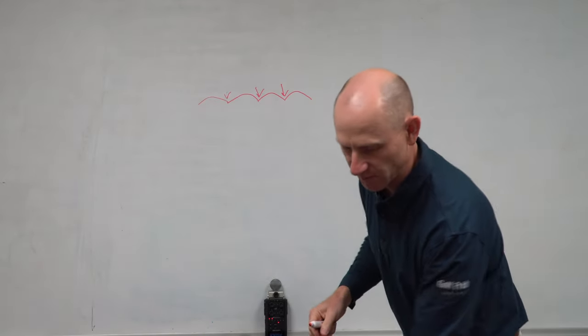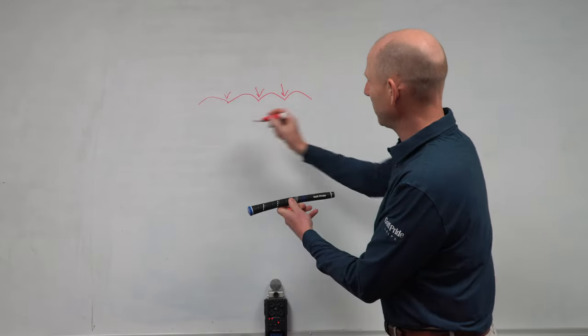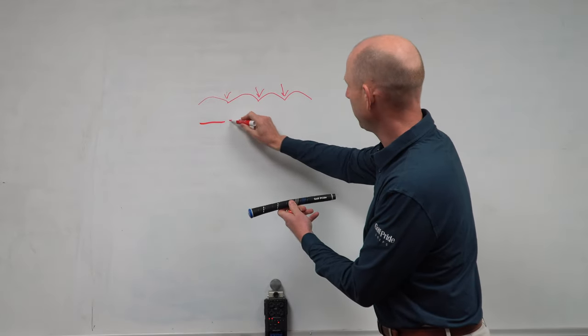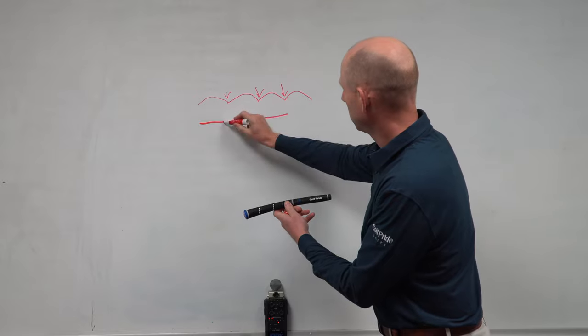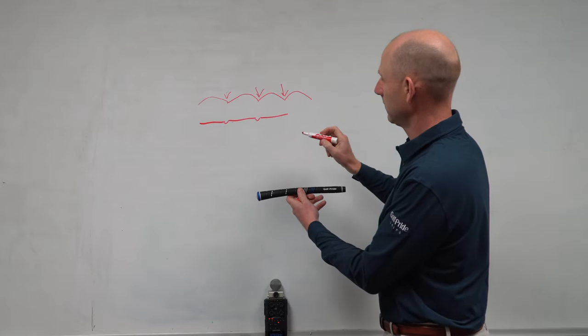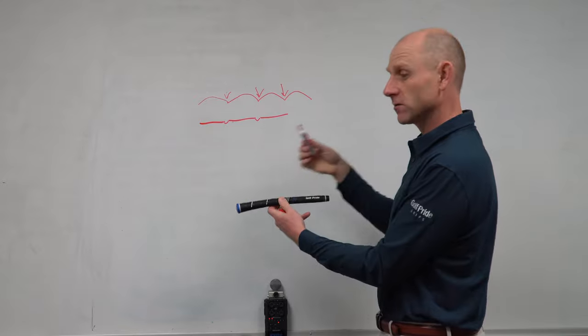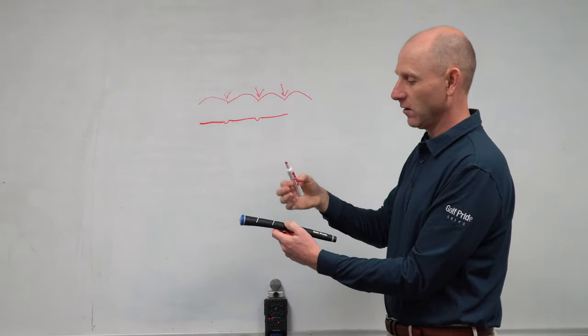But when you look at a CP2 Wrap, the wrap is a little bit different—I call this a flat wrap. There's no scalloping; it's more of a flat wrap, so it feels more like the Pro style, but